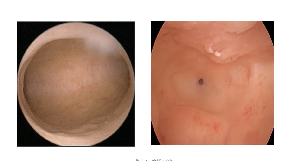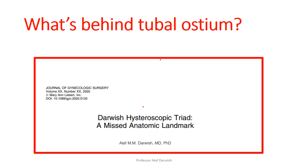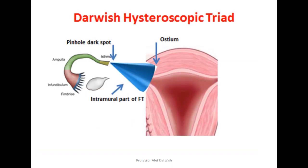At the cornual ends you can use the ostia as landmarks, but what's behind the ostia is not well described by hysteroscopic examination in many cases. So we have to evaluate what's behind the ostia, and this can be achieved by describing what's called the Darwish hysteroscopic triad.